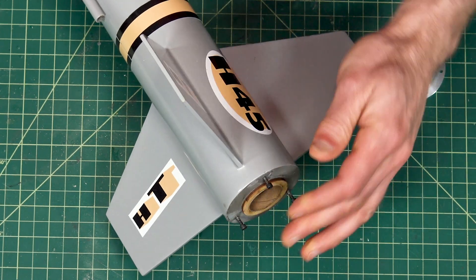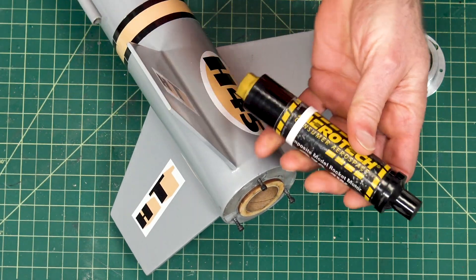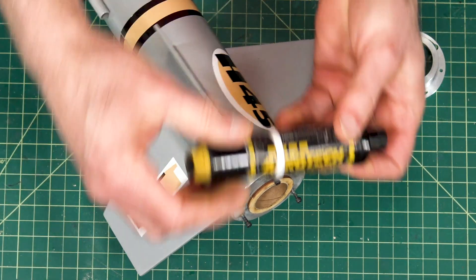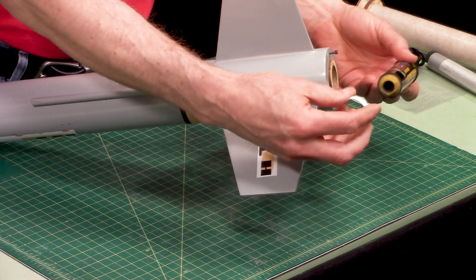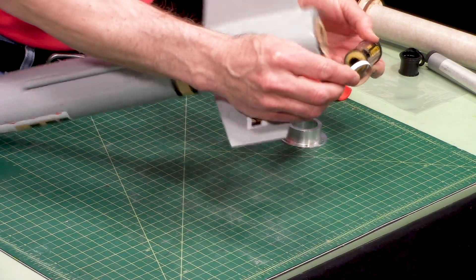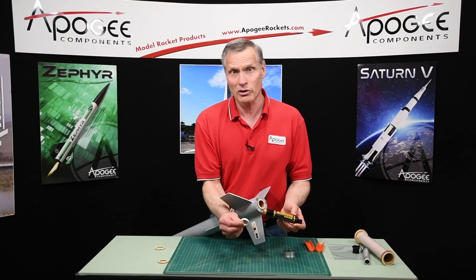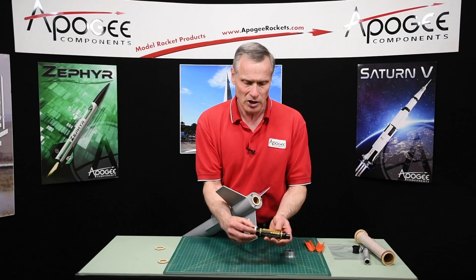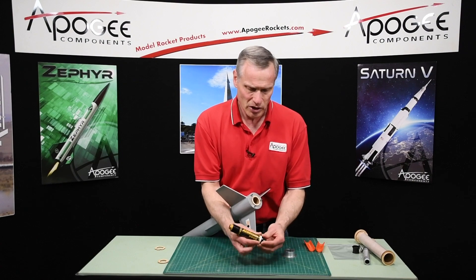You can take your 29 millimeter motor. Now for these you do need to cut a specific ring, and this is just from a body tube. If you don't know how to cut a body tube, we have a video on the Apogee website on cutting body tubes.